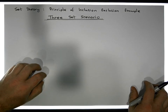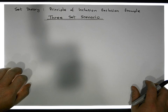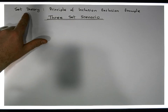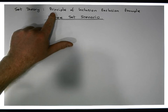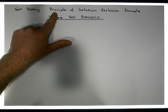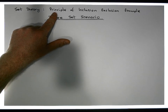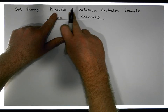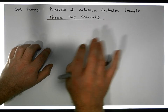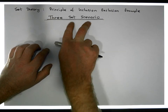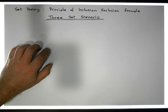Hi guys, this is Jonathan Lambert with the Mathematics Development and Support Service at the National College of Ireland. This short video is another in our series dealing with set theory — specifically an application of the principle of inclusion-exclusion based on a three-set scenario.